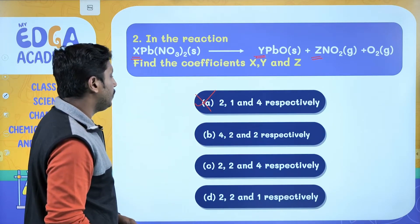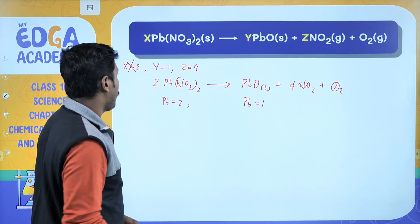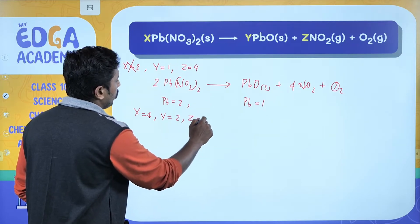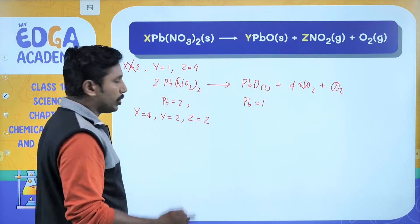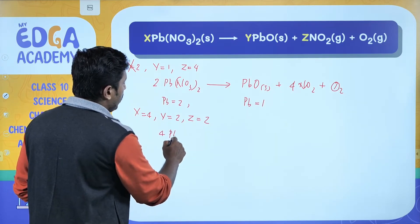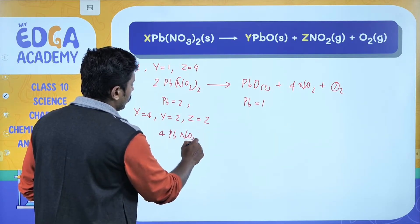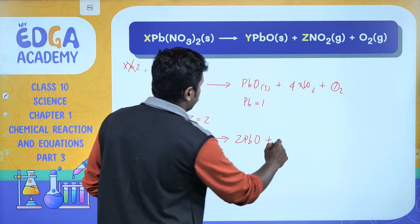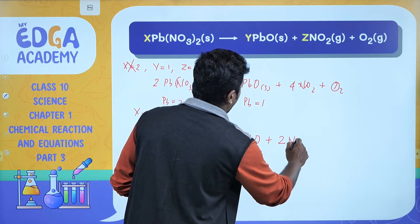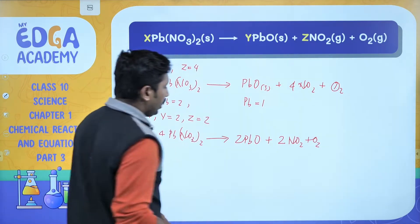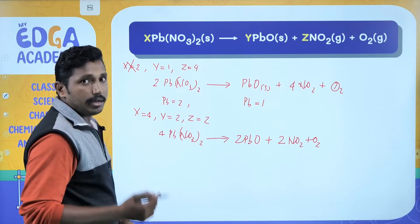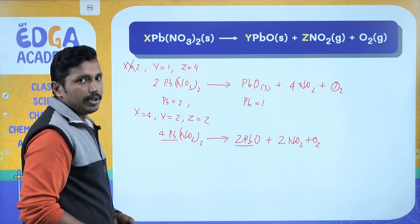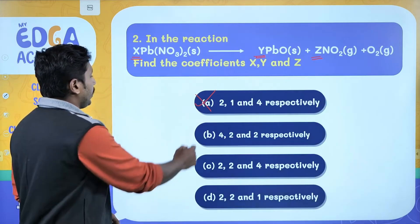Selecting the second option: X=4, Y=2, and Z=2. Substituting: 4 Pb(NO3)2 gives 2 PbO plus 2 NO2 plus O2. Here also, the number of lead atoms on the left hand side is 4, but on the right hand side it is only 2. So we can neglect the second option as well.